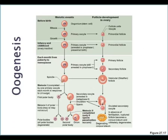Every month, once a month, one egg will undergo this follicle development, and this is stimulated by FSH. The maturest follicle that we have is known as the graafian follicle. This is the one that will undergo the ovulation of the egg. At that point, it's a secondary oocyte that's ovulated. And if it's fertilized, this corpus luteum will start producing all the progesterone and estrogen that's needed to get the uterus ready.